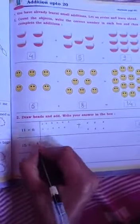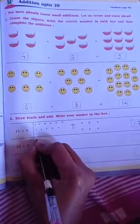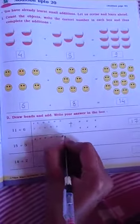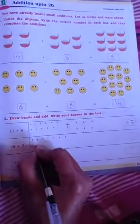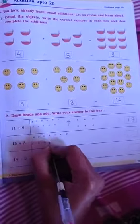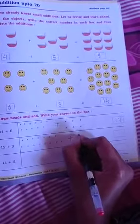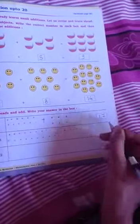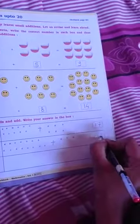15 plus 3. So, we write here beads. Draw 15. 1, 2, 3, 4, 5, 6, 7, 8, 9, 10, 11, 12, 13, 14, 15. Plus 3 beads are added. 1, 2, 3. So, how many beads? 15, 16, 17, 18. So, we write here 18 beads. 14 plus 2.